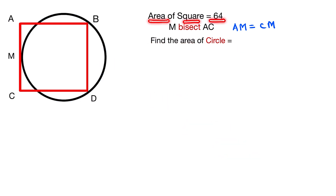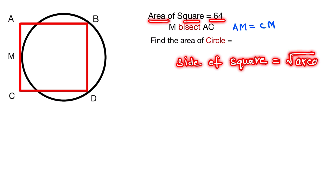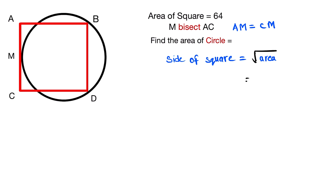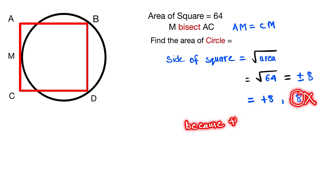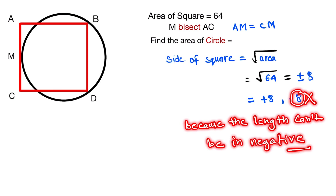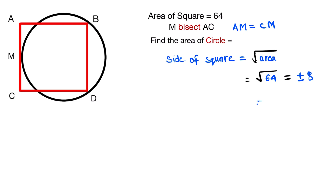First, the area of the square is given, so we have to find the side of the square. The side of the square is given by the square root of the area. We put the value: area is equal to 64, so the square root of 64 is equal to plus or minus 8. We can't take minus 8 because length can't be negative, so the side of the square is 8.